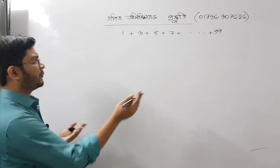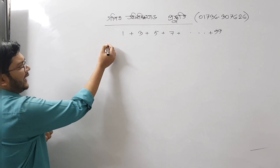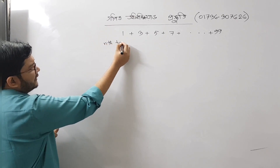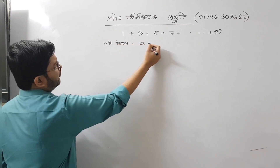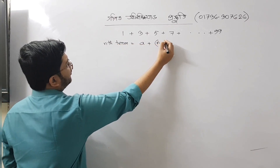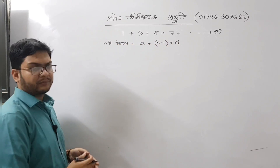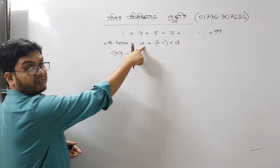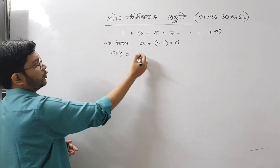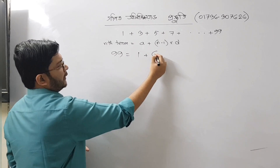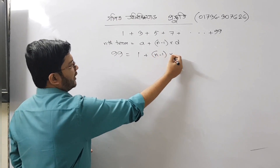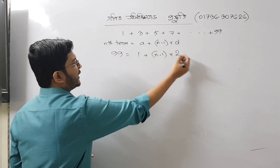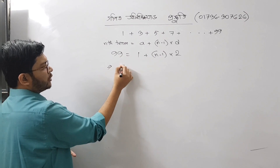We know that the nth term is equal to a plus n minus 1 into d. So the nth term has a value of 99. A is the first term, so 1 plus n minus 1 times d. D has a value of 2, so 1 times minus 2.